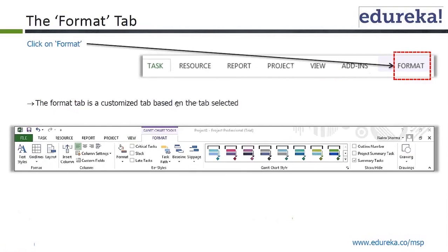The Format tab is a customized tab based on the tab selected. You can change text style, grid lines, layout, insert columns, and Gantt chart style. You can see the baseline, select the critical task, slack, format, etc. That is what the Format tab does.